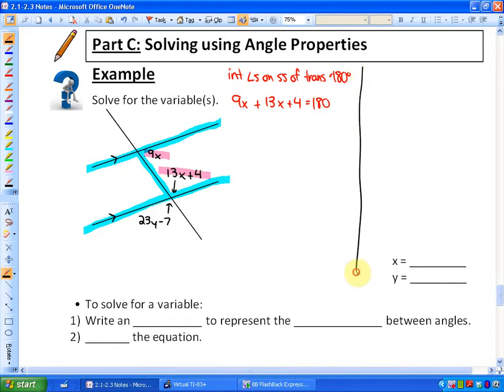The second property that we know, and in this case it's not a parallel line property, but we just want to relate any of these algebraic expressions to each other that we can. You may remember that if we have two intersecting lines, the angles that are opposite from each other, in other words 13x plus 4 and 23y minus 7, they are equal to each other. So vertically, those are called vertically opposite angles. So I can state that the algebraic expression 13x plus 4 is equivalent to 23y minus 7.